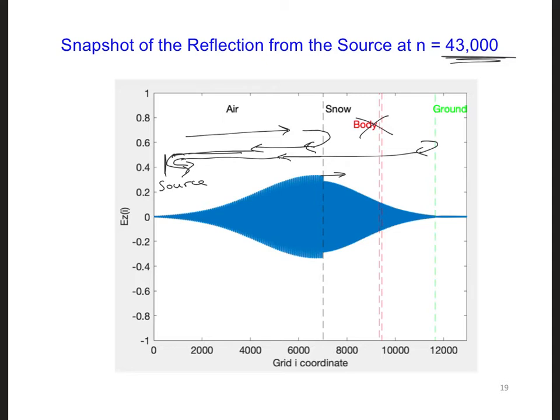To make our source more realistic, we should model a current density J at the location of the source.